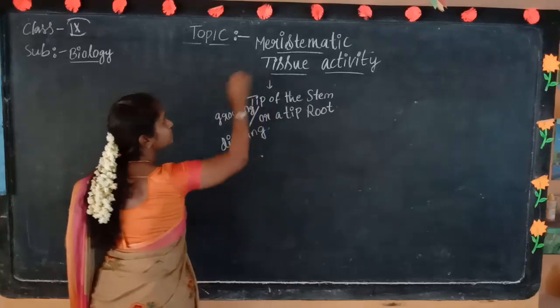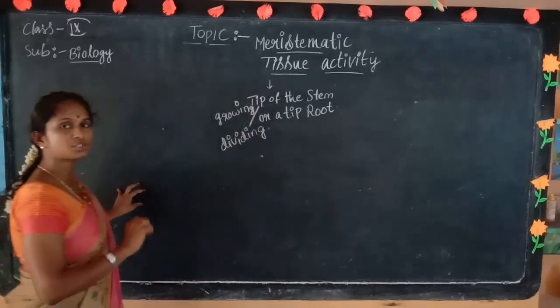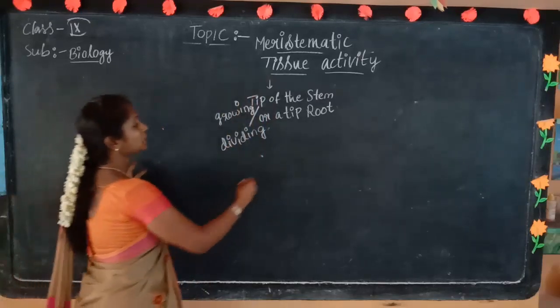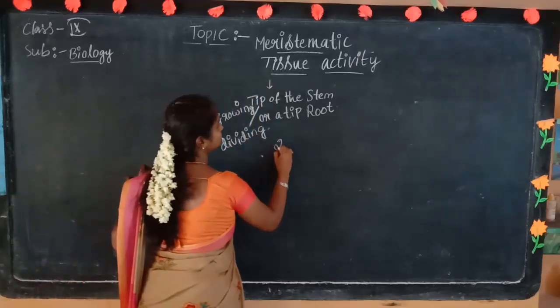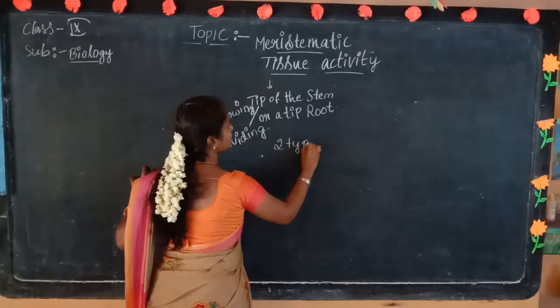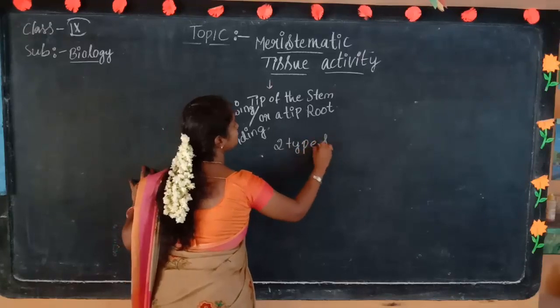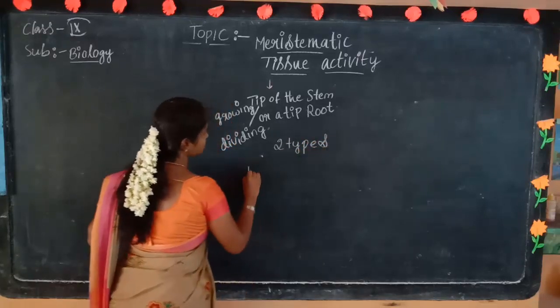These meristematic tissues are three types. What are the three types? Looking at the diagram we already discussed, you know.